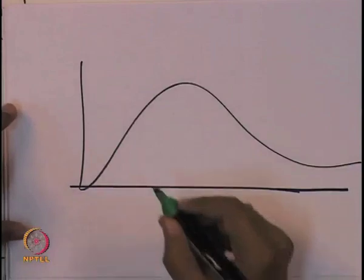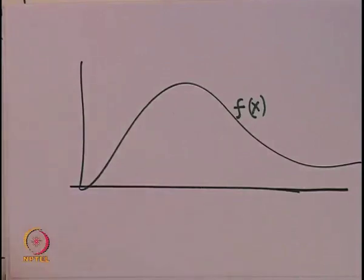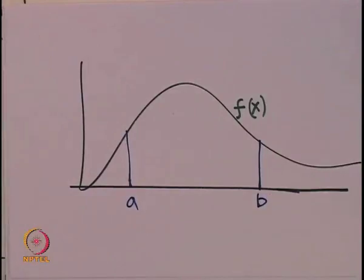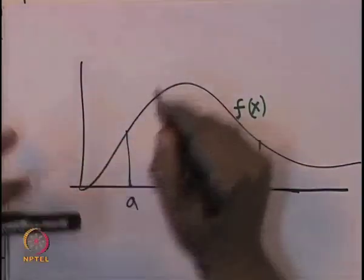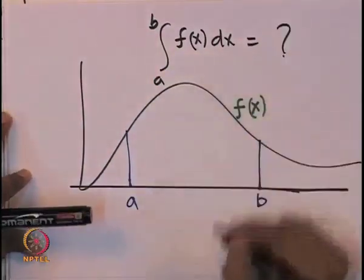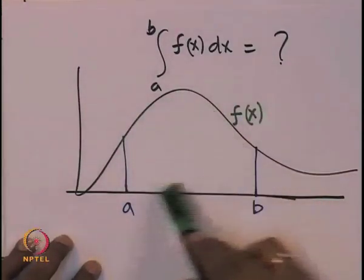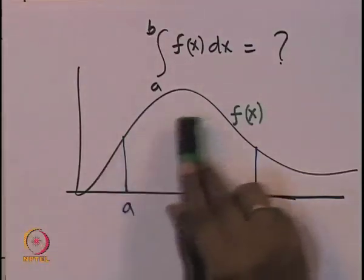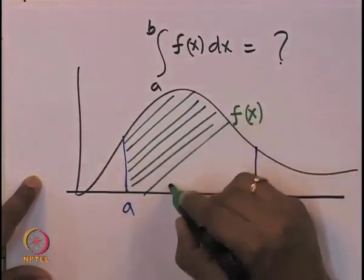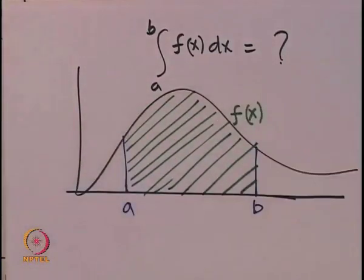Now we want to have some integral of this function. Let us call this function f(x). We want to integrate this function between point a and point b — so we want to calculate the integral of f(x) from a to b. From what we learnt last time, it is nothing but the area under this curve between these two points.